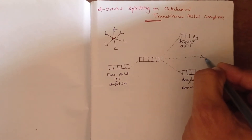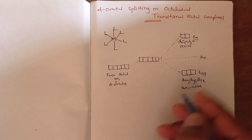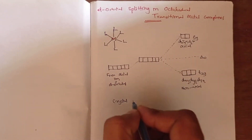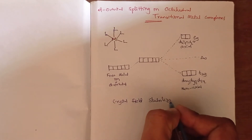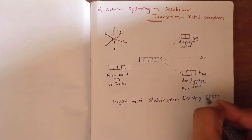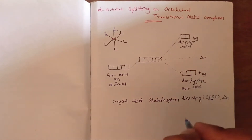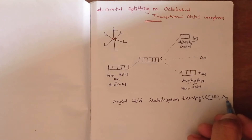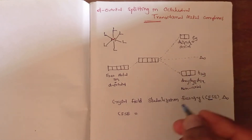The triply degenerate state is denoted as t2g. The energy difference between the lower and higher energy levels after splitting is called the Crystal Field Stabilization Energy, abbreviated as CFSE. It is denoted as Δo, where 'o' stands for octahedral, representing the shape of the complex. So Δo is the octahedral crystal field stabilization energy.